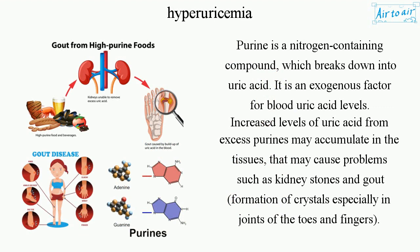Increased levels of uric acid from excess purines may accumulate in the tissues, causing problems such as kidney stones and the formation of crystals, especially in the joints of the toes and fingers.